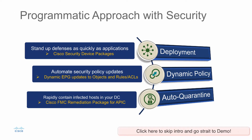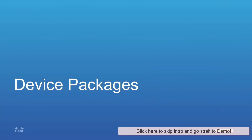Cisco security appliances offer an exceptional level of protection in any environment. However, in Cisco ACI — our own SDN offering — we take it to the next level by using a programmatic approach with security. We can automate deployment of our appliances using device packages, make policies more manageable by allowing APIC to dynamically update the rules, and rapidly quarantine infected hosts in your data center using the remediation package for APIC.